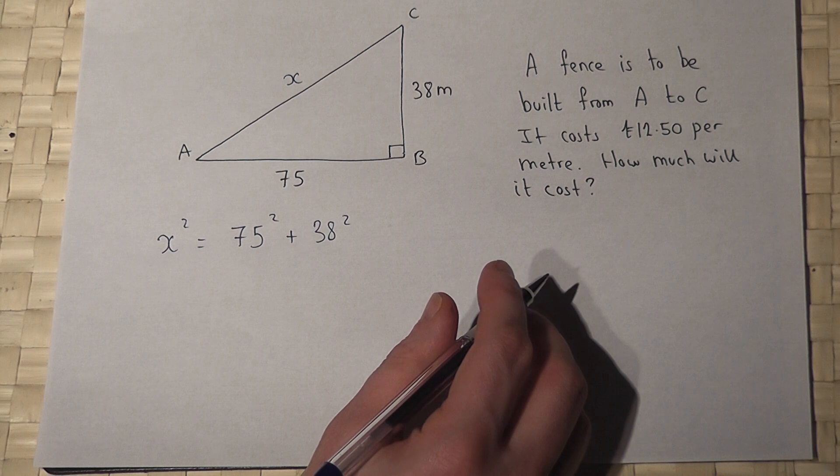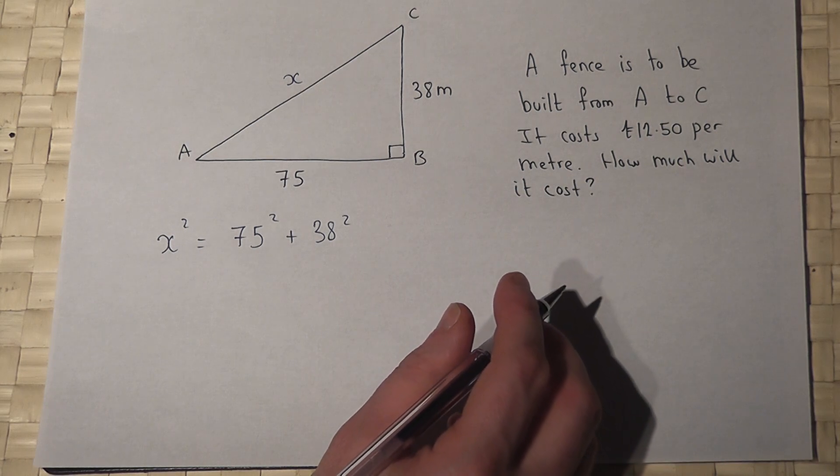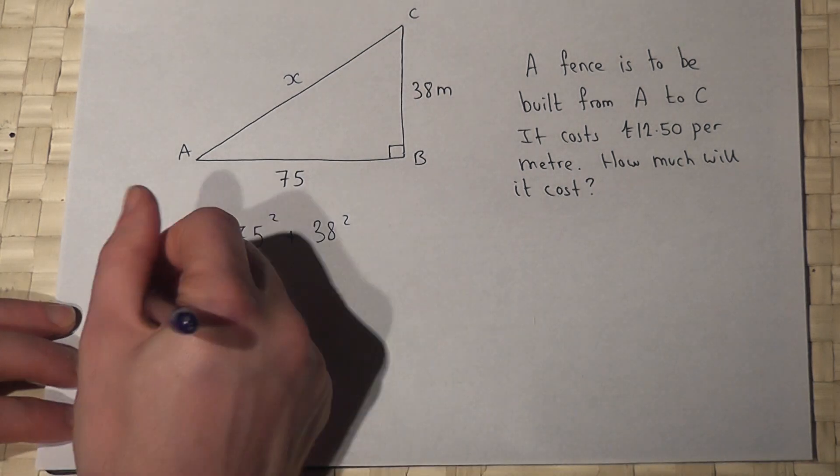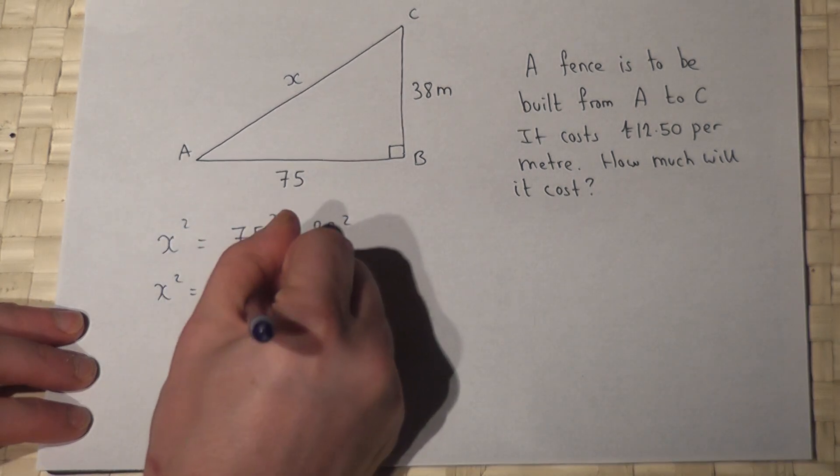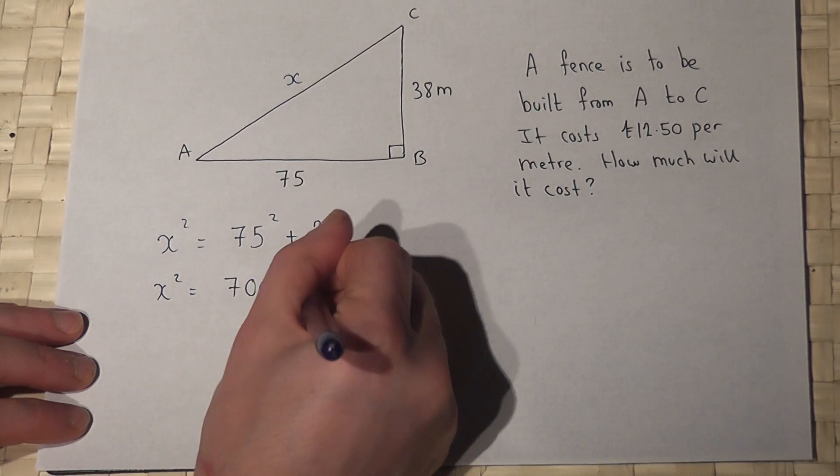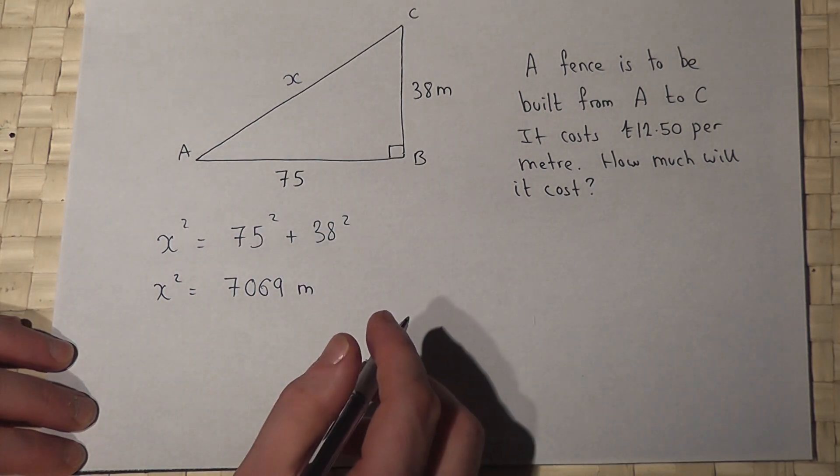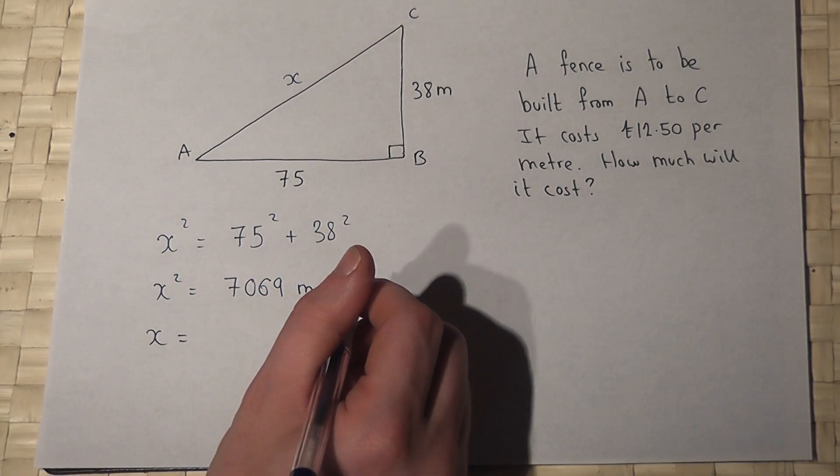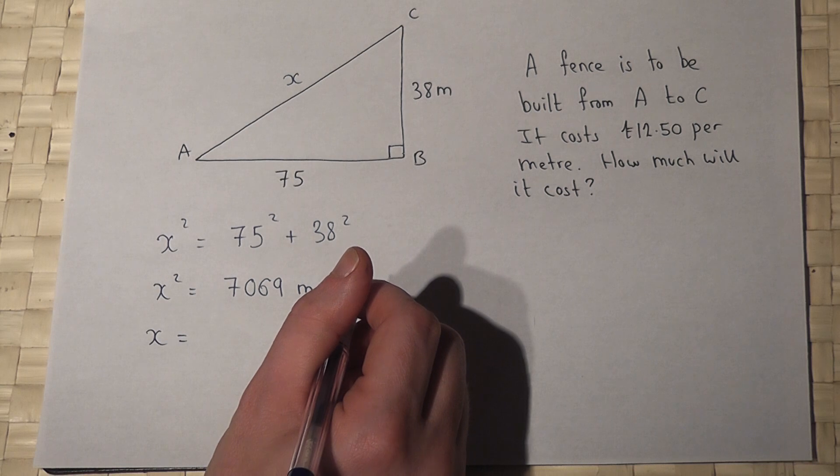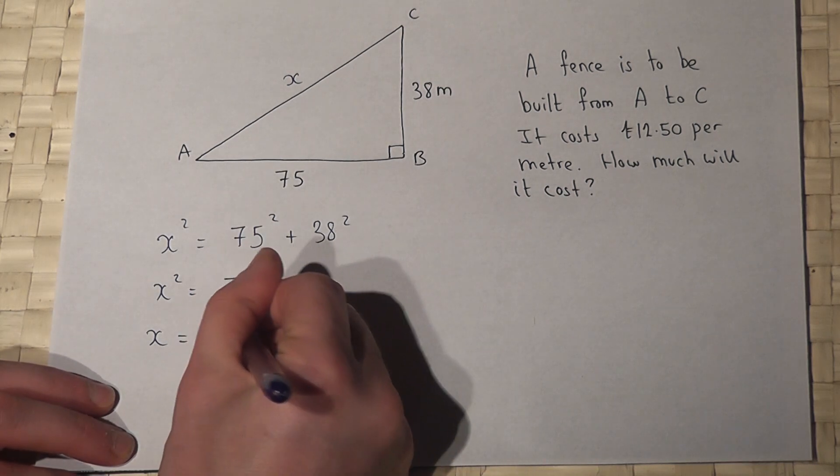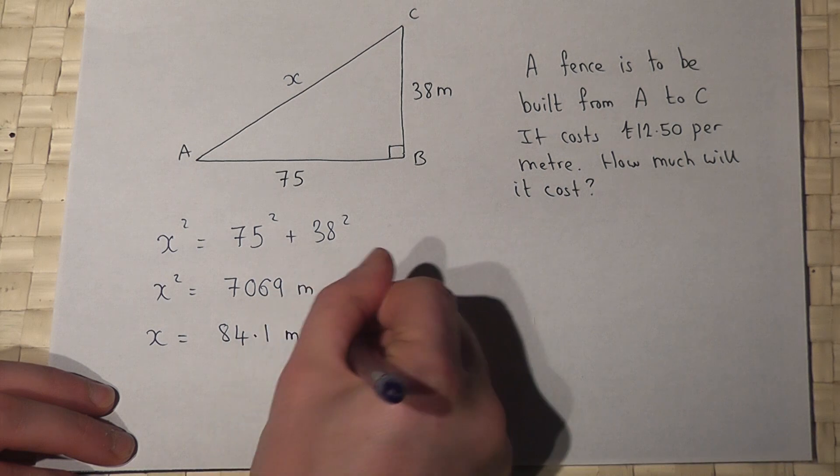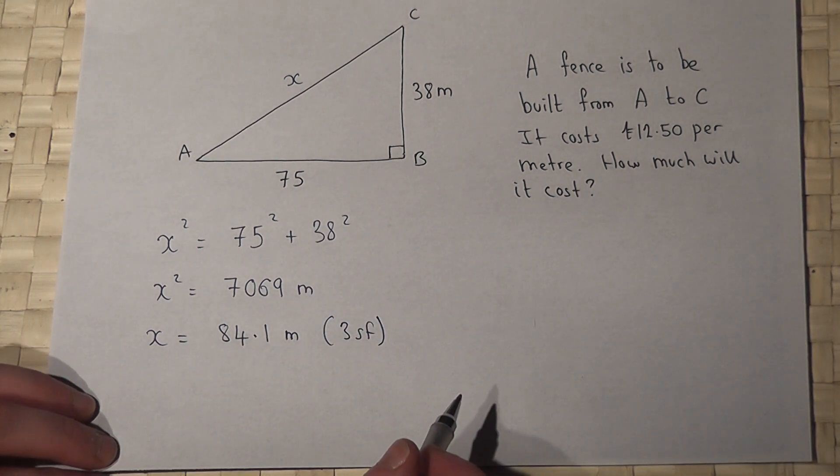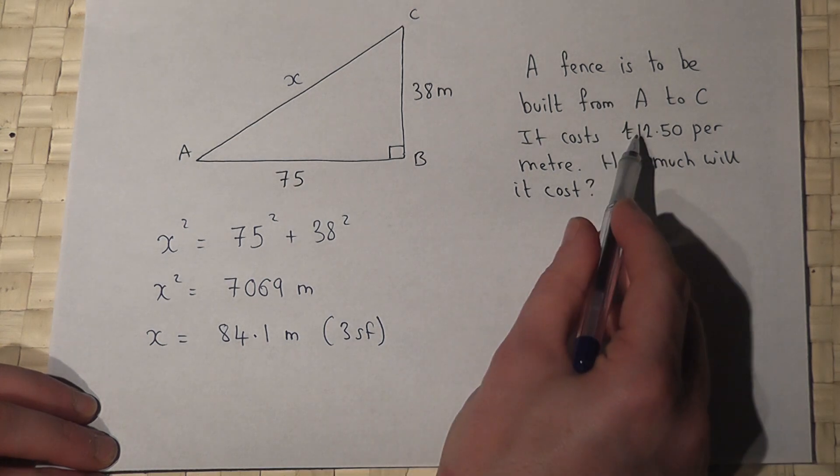So if we work this out in a calculator, then we get that x squared equals 7069 metres. So therefore x will equal the square root of that, which is 84.1 metre to 3 significant figures, and it costs £12.50 per metre.